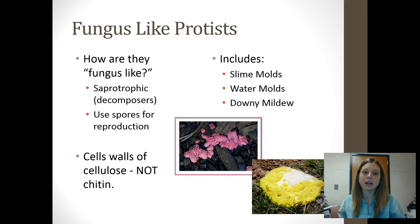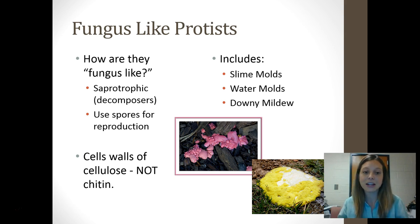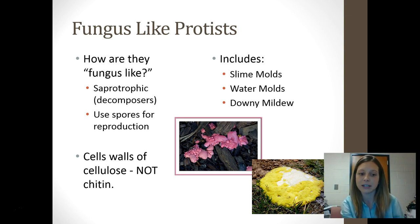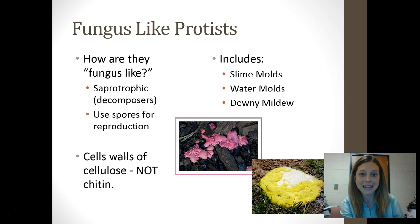Moving on from plant-like protists, we're going to talk about fungus-like protists. What makes them fungus-like? The fact that they are decomposers, or saprotrophic, just like fungi. They also use spores for reproduction, which true fungi also do. Interestingly, they have cell walls made of cellulose, unlike true fungi, which have cell walls made of chitin.